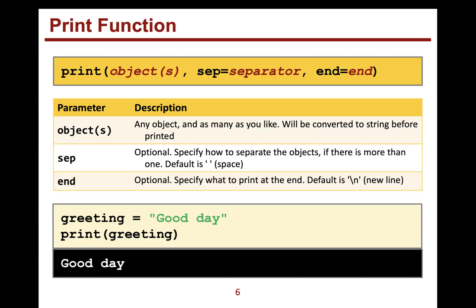Here's an example of printing a variable. I create a variable named greeting — greeting is the identifier. We give it the value good day using double quotes, which means Python sees it as a string whose value is good day. When we print a variable, Python goes and gets the value of that variable and prints it. What's happening is it prints good day without any quotes — just the value of the variable.